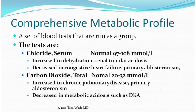The serum chloride can be increased in dehydration and renal tubular acidosis, and it can be decreased in congestive heart failure and in primary aldosteronism. The carbon dioxide can be increased in primary pulmonary disease, such as severe COPD, and in primary aldosteronism. It can be decreased in metabolic acidosis, such as occurs with diabetic ketoacidosis.